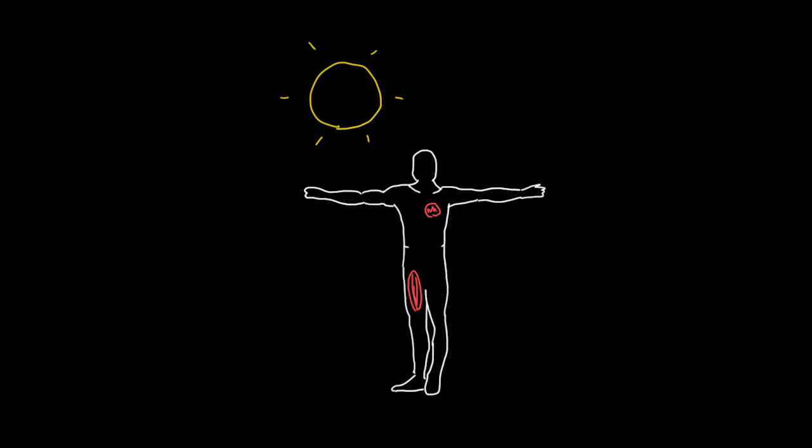A problem that your body might face in this situation is how does it maintain its core body temperature of 98.6 degrees Fahrenheit? One of the ways that your body can get rid of this excess heat produced by your muscles is to sweat.